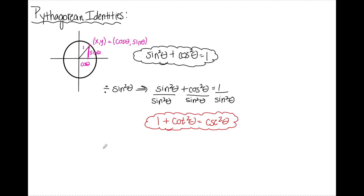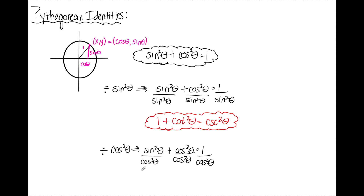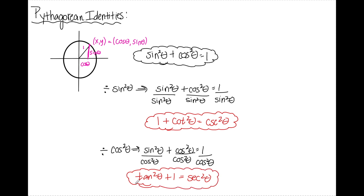The last Pythagorean identity comes from dividing the original equation by cos²θ. sin²θ divided by cos²θ is tan²θ, cos²θ divided by cos²θ is 1, and 1 over cos²θ is sec²θ. So: tan²θ + 1 = sec²θ. Here's the deal — I don't memorize these last two. I just memorize sin²θ + cos²θ = 1, and remember I can divide by sin²θ or cos²θ to get the other two identities, so there's really no need to memorize them separately.